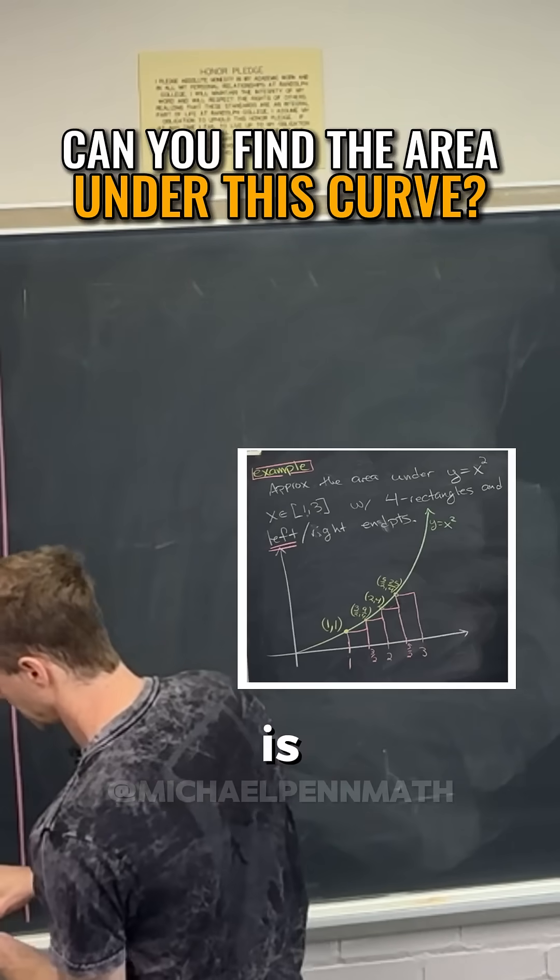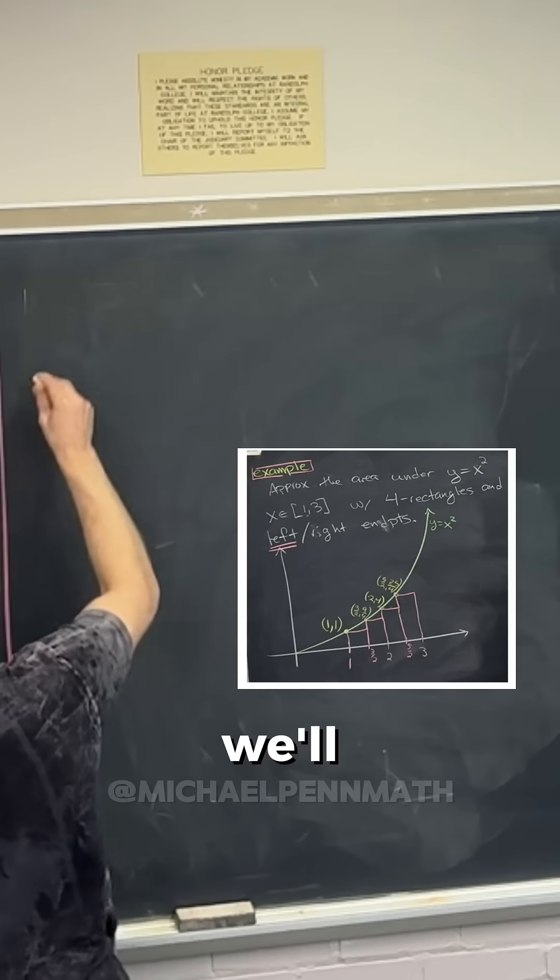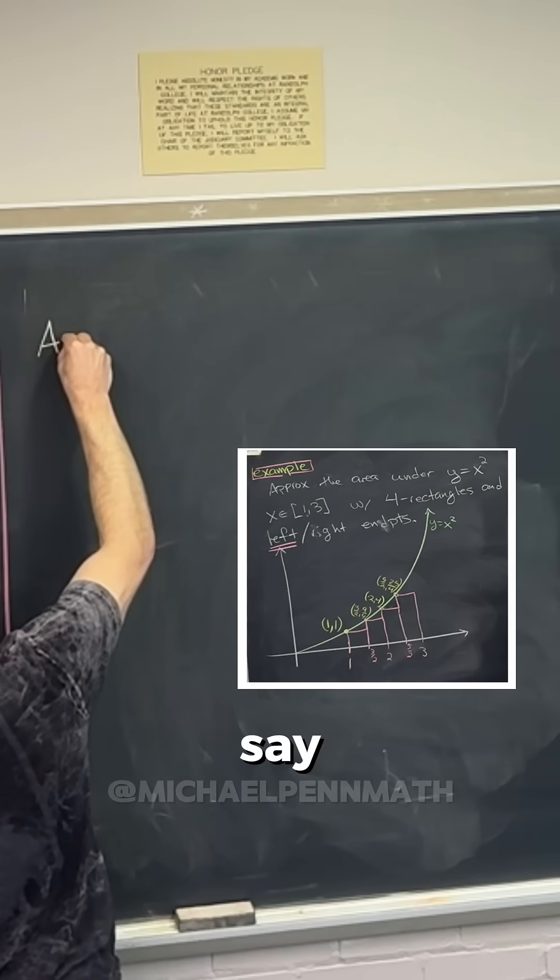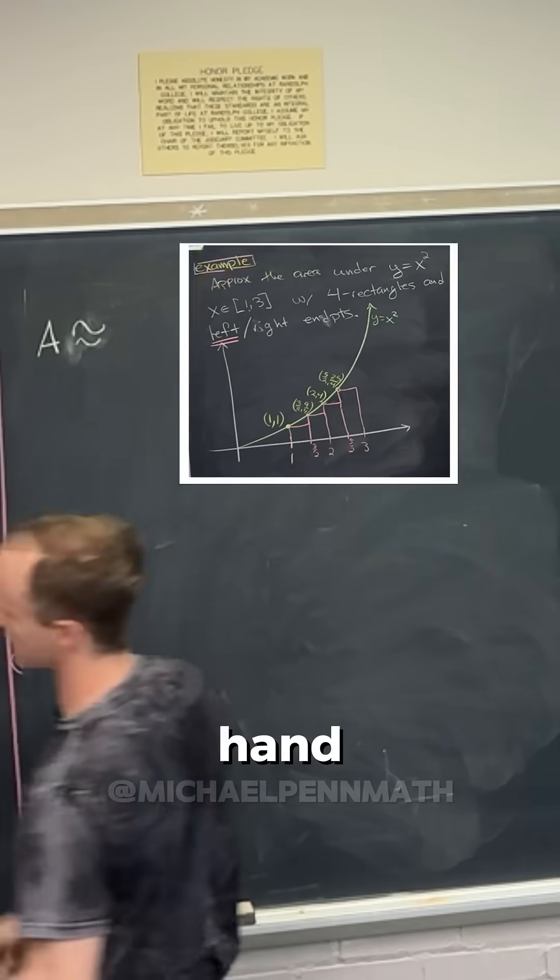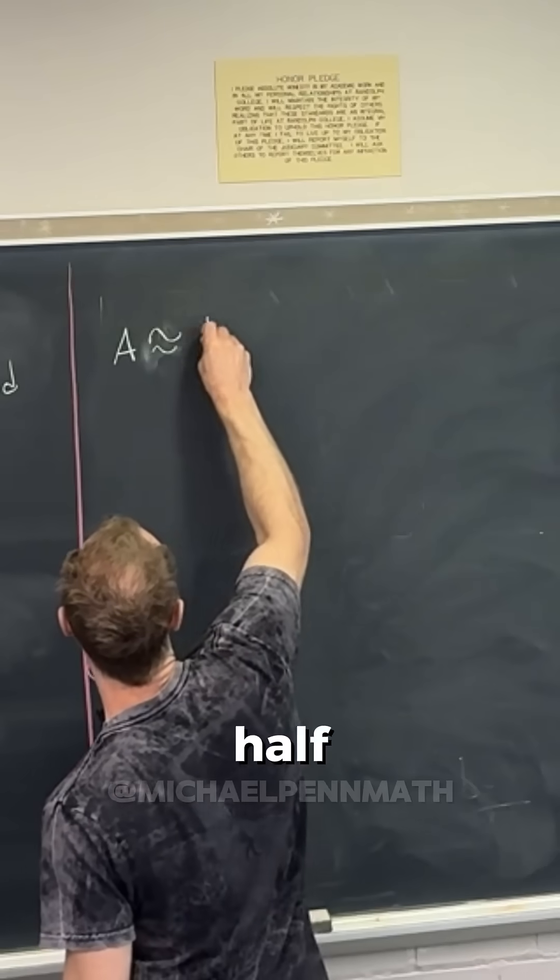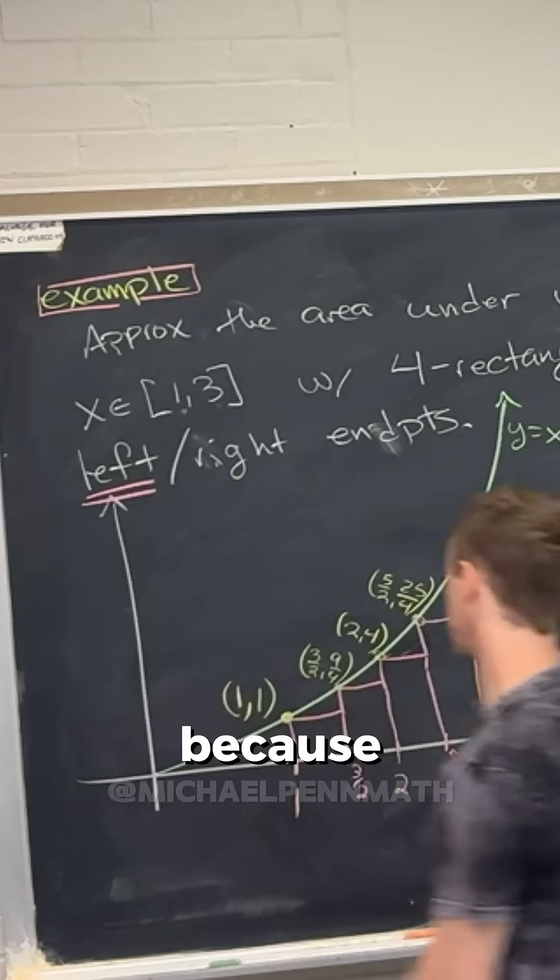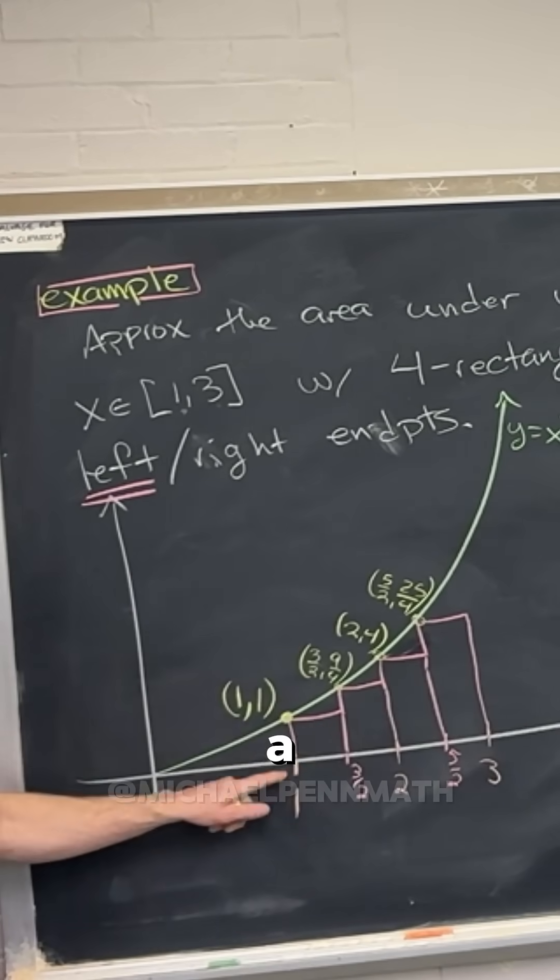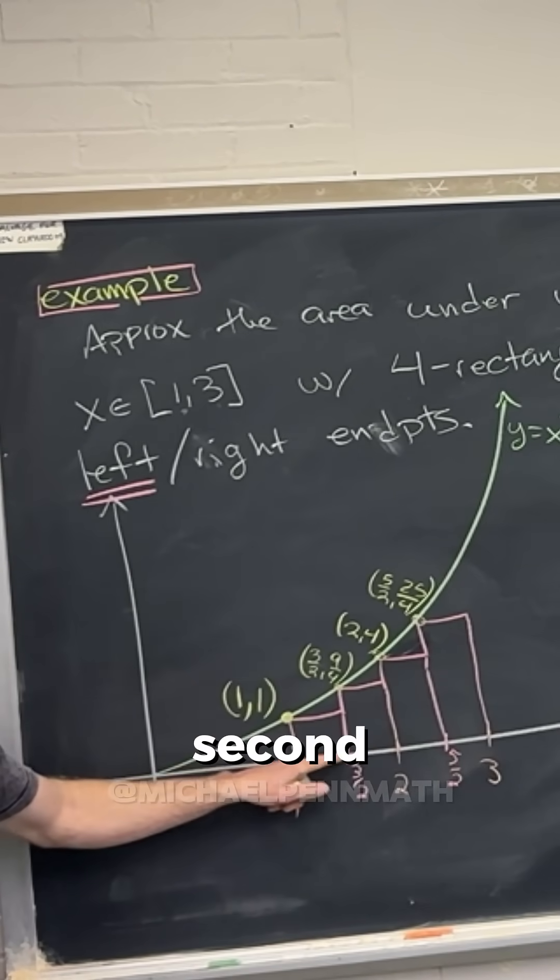So our area approximation is this. We'll just say area, so this is our left hand approximation. Right, so the area of the first rectangle is a half, right, because it's a width of a half, a height of one.